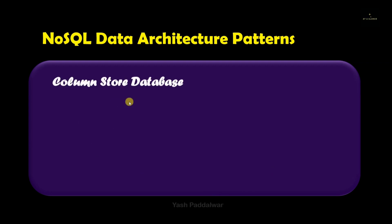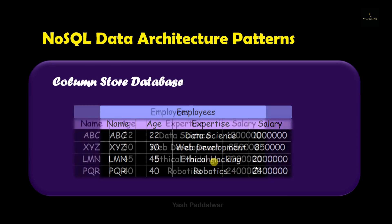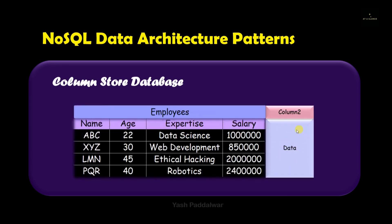Let's have a look at a simple example to understand this concept. Here you can see there are certain columns: name, age, expertise, and salary, and on top of these there is a single column which is 'employee'. So we can clearly see that the columns name, age, expertise, and salary are the data of all the employees inside that company. Hence 'employees' is the super column and name, age, expertise, salary are all the sub-columns. Similarly, we can have other columns — for example, to the right of employees we can have column 2, and column 2 may have several columns inside it.